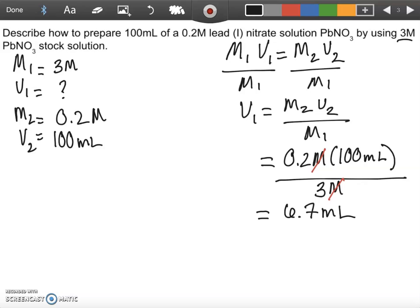What this means is I have got to go to the preparatory room, get the bottle of 3 molar lead 1 nitrate, and then use a graduated cylinder to measure out 6.7 milliliters.